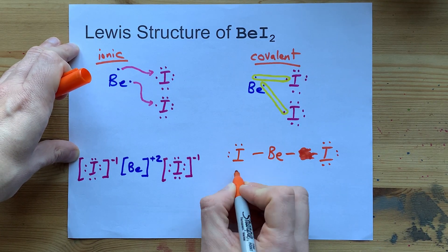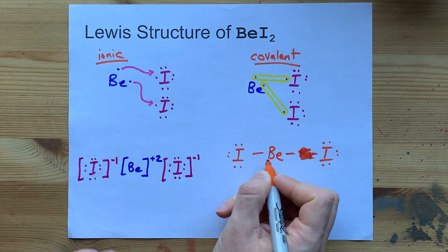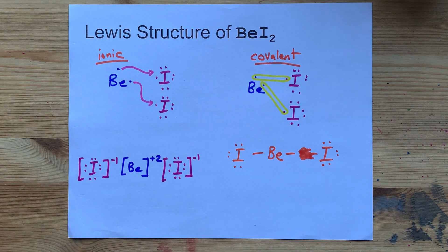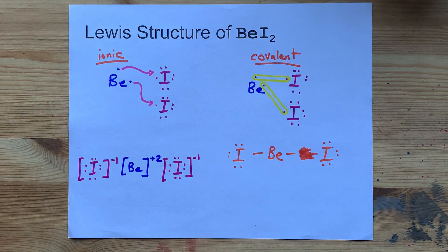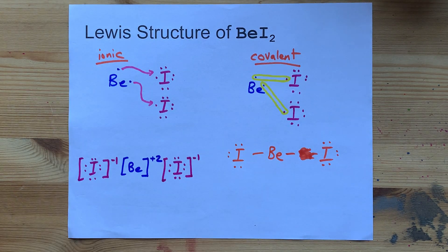And similarly, beryllium can be covalently bonded to iodine in the other direction as well. Now, this is beryllium iodide as a molecular compound. Now, just to complicate things even more...